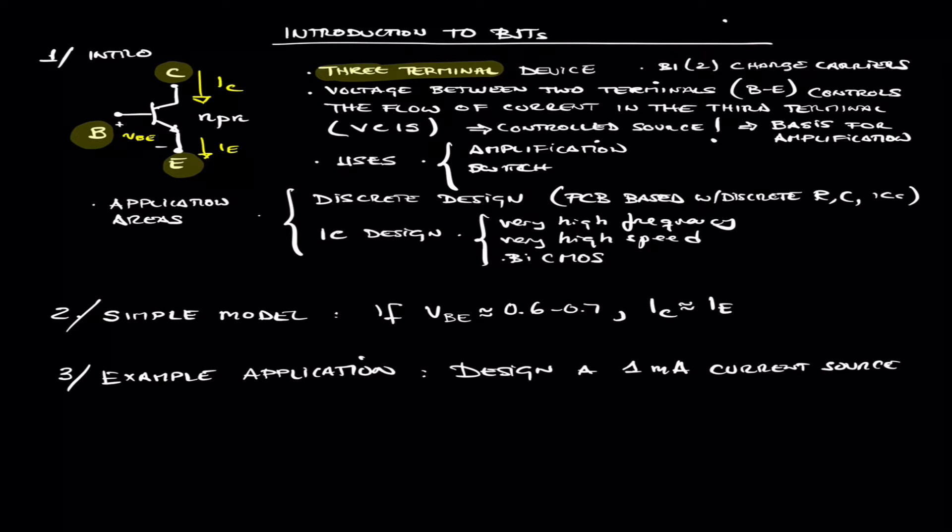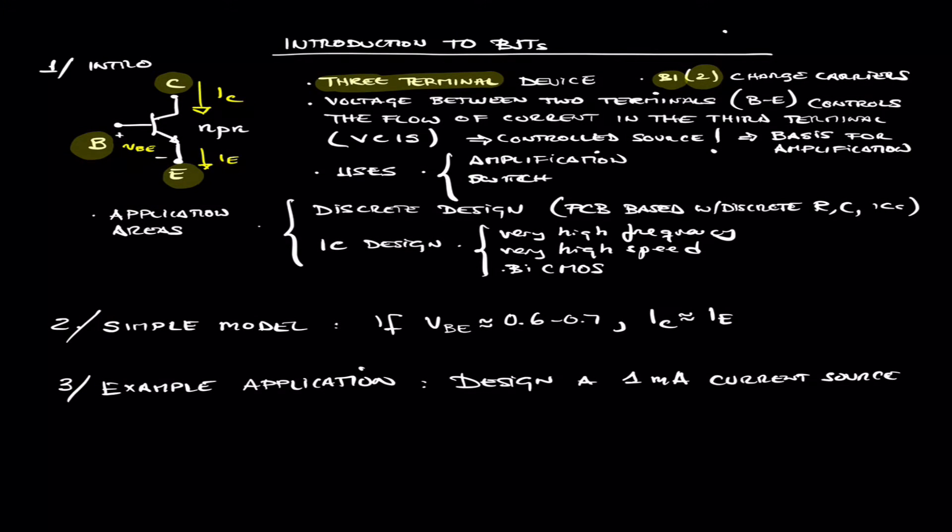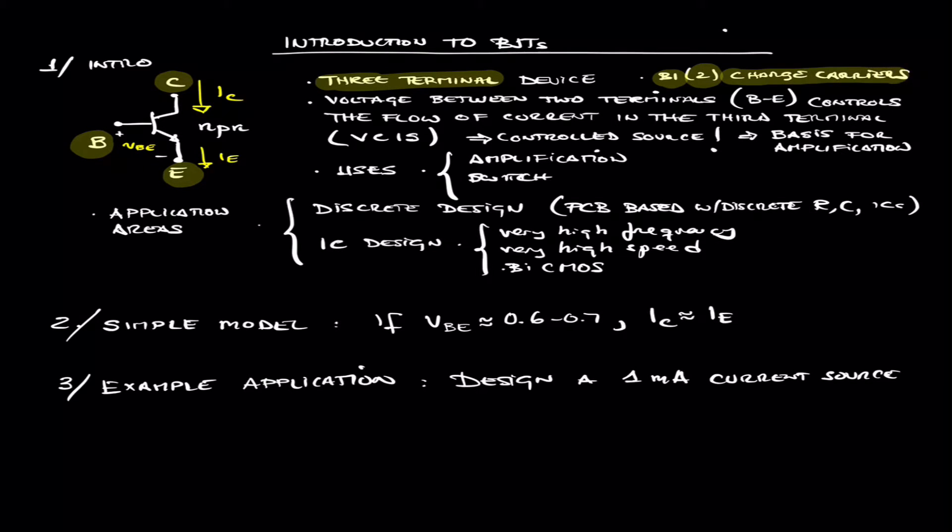We call the BJT a bipolar, bi as a prefix meaning two, two polarities. And what do we mean by two polarities? When we go over the operation and the mechanisms of the BJT, you'll see that it utilizes two charge carriers for its operation. You're going to have electrons in the conduction band, as well as holes, electrons in the valence band to make this device work.